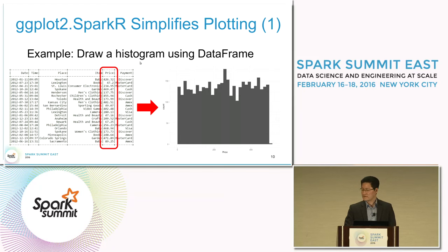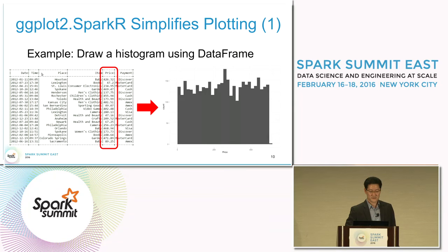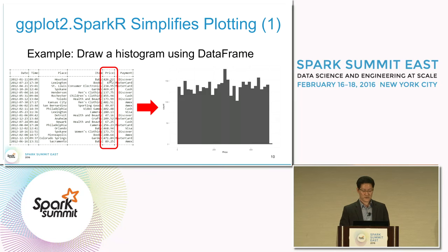This and the next slide will show how greatly our package simplifies drawing histograms using a Spark data frame. The left table shows a Spark data frame with six columns: date, time, place, item, price, and payment. We want to draw a histogram of the price column to produce the histogram shown on the right.